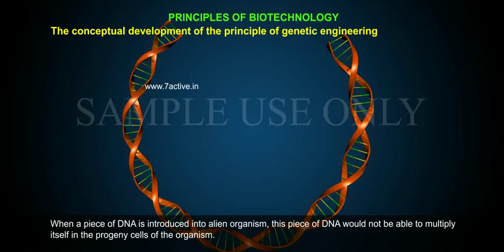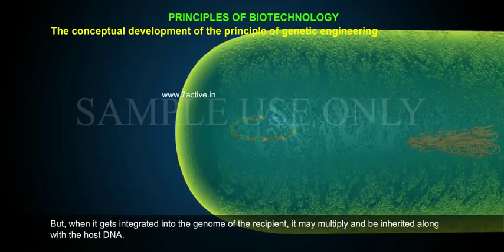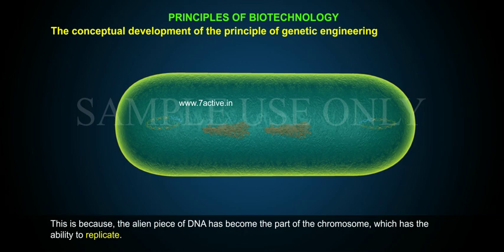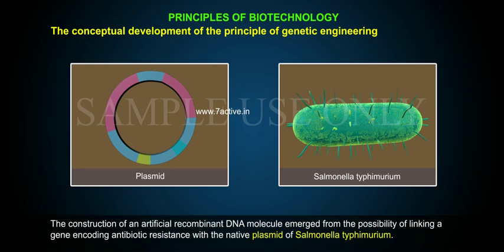When a piece of DNA is introduced into an alien organism, this piece of DNA would not be able to multiply itself in the progeny cells. But when it gets integrated into the genome of the recipient, it may multiply and be inherited along with the host DNA, because the alien piece of DNA has become part of the chromosome which has the ability to replicate.